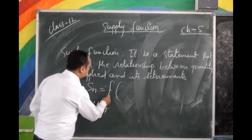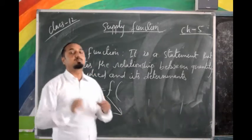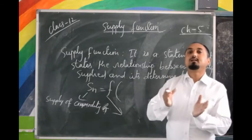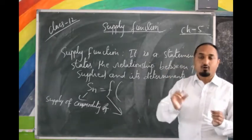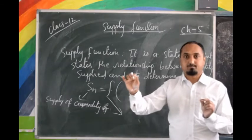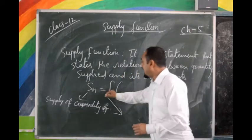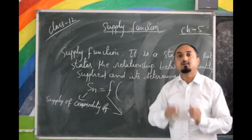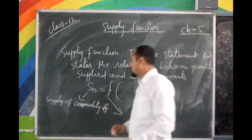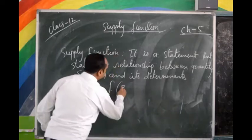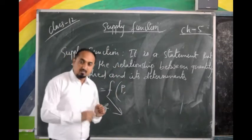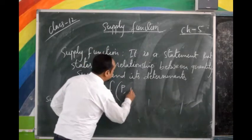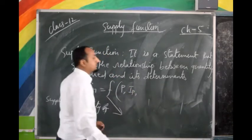F is an expression that shows the relationship — it shows the relationship between the supply and its determinants. Now, what are the different determinants? One is price of the commodity, represented as P. Similarly, input prices, let us represent by IP.